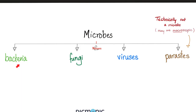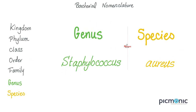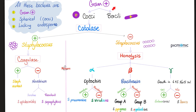Microbes are bacteria, fungi, viruses, or parasites. That's why microbiology studies bacteriology, mycology, virology, and parasitology. When I say Staphylococcus epidermidis, Staph is the genus, epidermidis is the species. Staphylococcus epidermidis is a gram-positive coccus, catalase-positive, coagulase-negative, and novobiocin-sensitive.